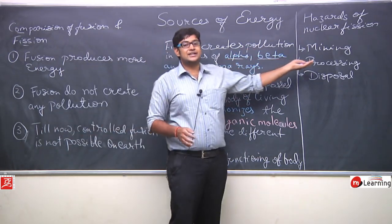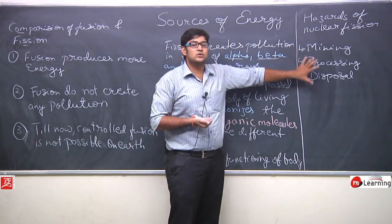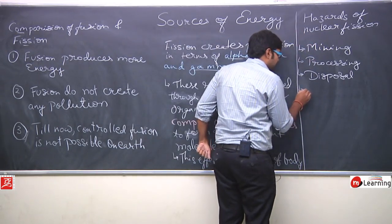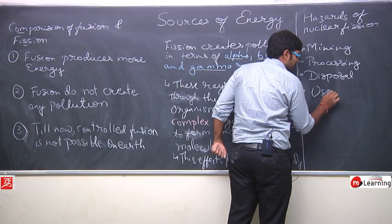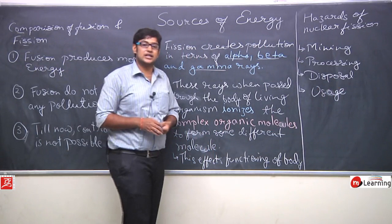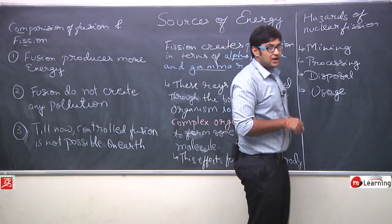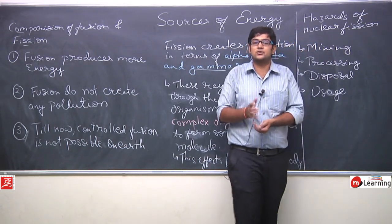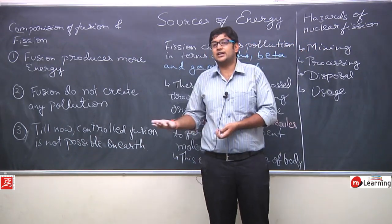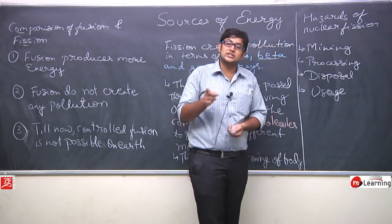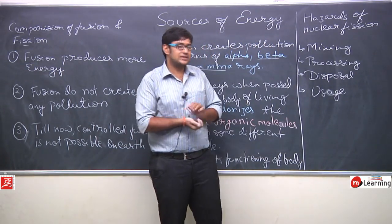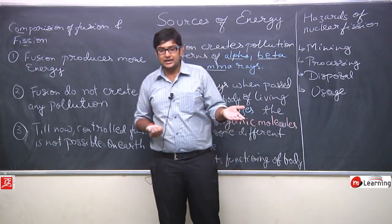So in this way hum hazards ko prevent kar sakti hain. Yeh hazards yaha pe ho sakti hain, isko isse tarah se bachaya ja sakta hai. Then fourth kya ho sakti hai? Fourth ho sakti hai ki jab uska use ho raha hai - usage. Jab usko hum use kar rahe hain, jab hum usse electricity produce kar rahe hain. In that case ho sakti hai. Toh us cheez ko bhi prevent karna zaroori hai. Waha pe bhi hazard ho sakti hai. Waha pe jo engineers, jo scientists log kaam karte hain, jo ispe research karte hain, ho sakti hai they also get affected because of this phenomena.